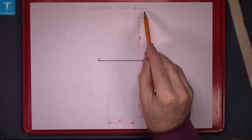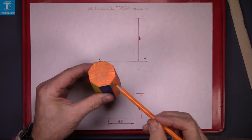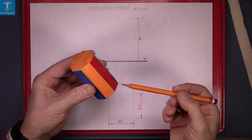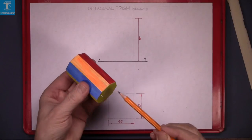Octagonal prisms, regular. This is the octagonal prism, eight sides, uniform shape and the base the same as the top.